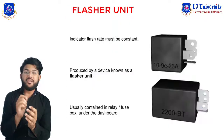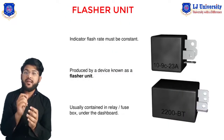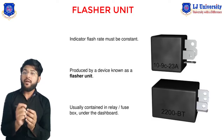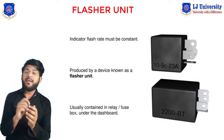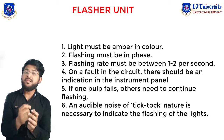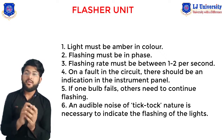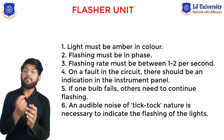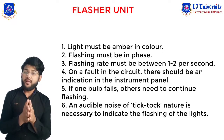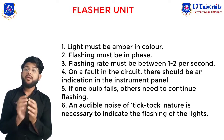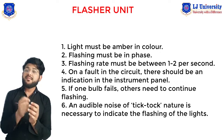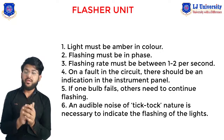Now let's look at the electronic flasher unit. Direction indicators have a number of requirements governed by law. First, the light must be amber in color. Second, flashing must be in phase. Third, the flashing rate must be between one and two per second. Fourth, on a fault in the circuit, there should be an indication on the instrument panel. Fifth, if one bulb fails, the other must continue flashing. Sixth, an audible tick-tick sound is necessary to indicate the flashing of the lights.